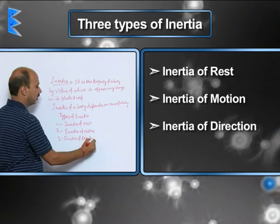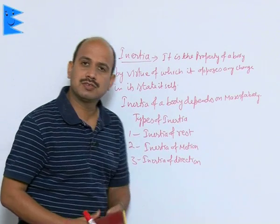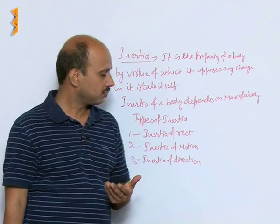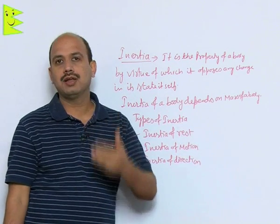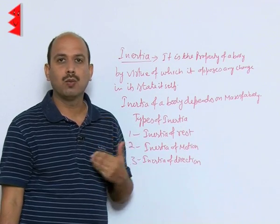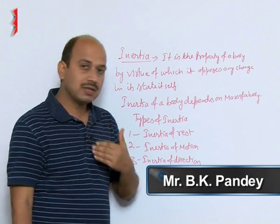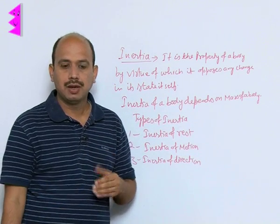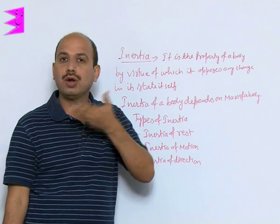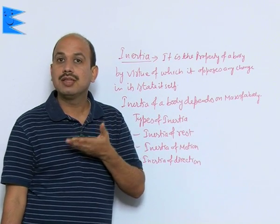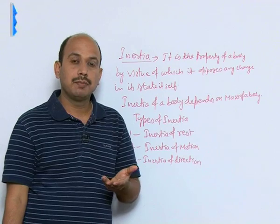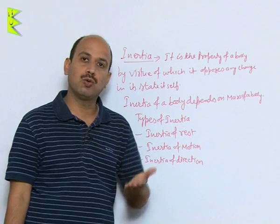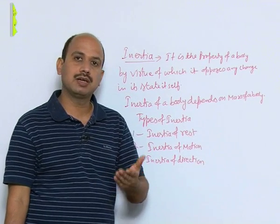For inertia of rest: suppose you are sitting in a bus which is at rest and the bus suddenly starts moving. You feel a jerk backward. This happens because as the bus moves forward, the part of your body touching the seat comes into motion in the forward direction, but the upper part of the body, which is not touching the seat, tries to remain at rest. As a result, we feel a jerk backward.